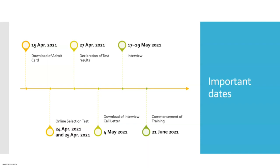Now let us see the important dates. The admit card can be downloaded from 15th of April. You can apply online until approximately the first week of April. The online selection test will be happening on 24th and 25th of April at respective locations. On 27th of April, the test results will be declared - since it is an online examination, results will come out quickly.